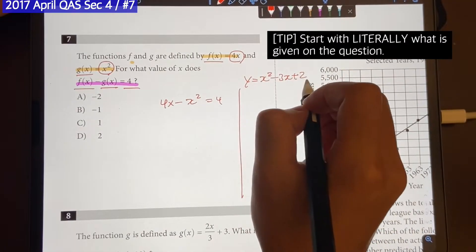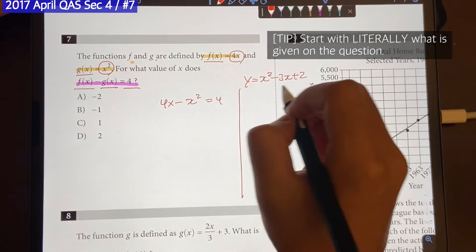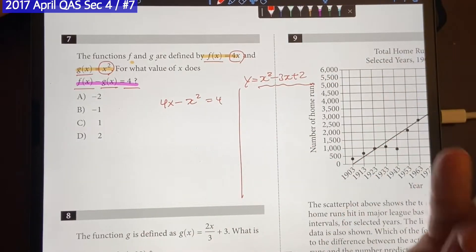So x squared, x and a number, x squared, x and a number. And they're usually on one side, all items together. So let's do that.